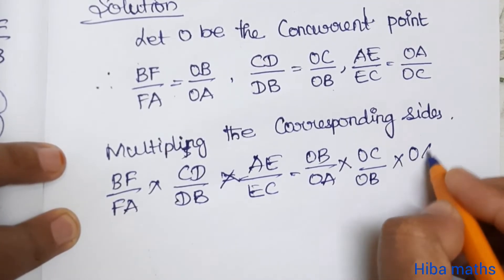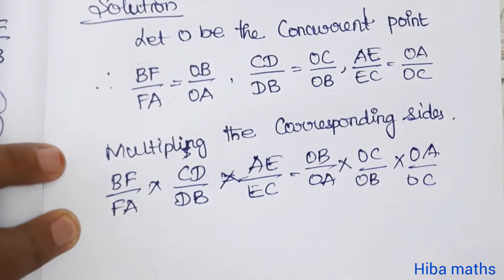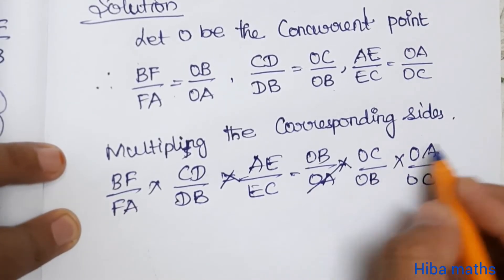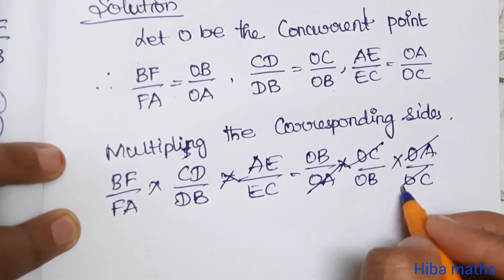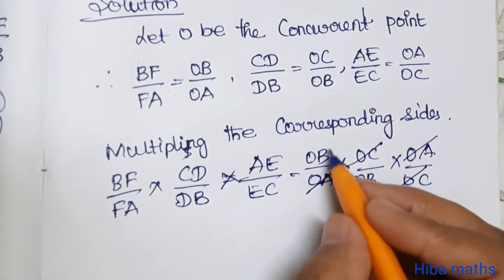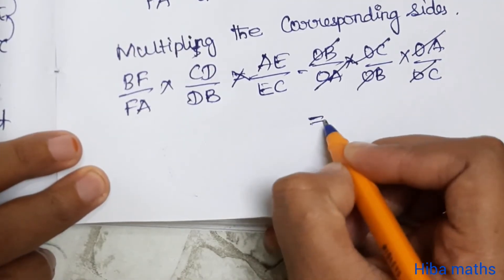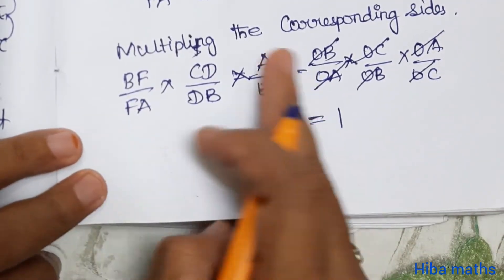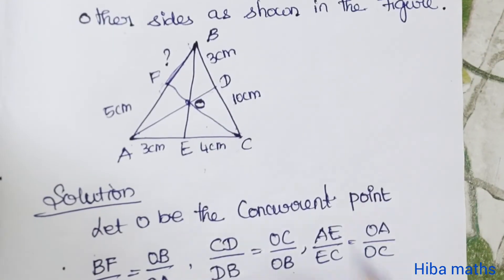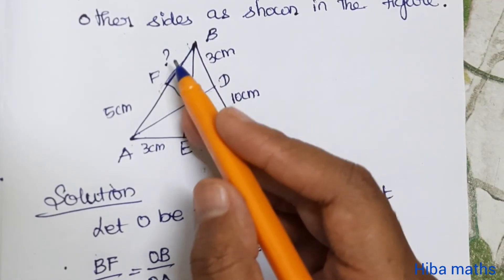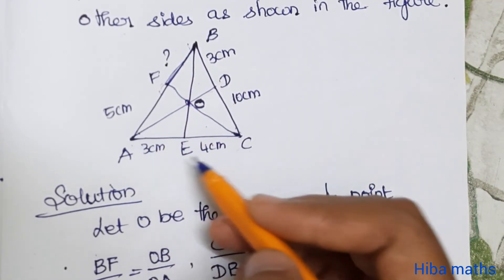If you look at this side, OA OA cancels, OB OB cancels, OC OC cancels, and OB OB is also cancelled. This equals 1.